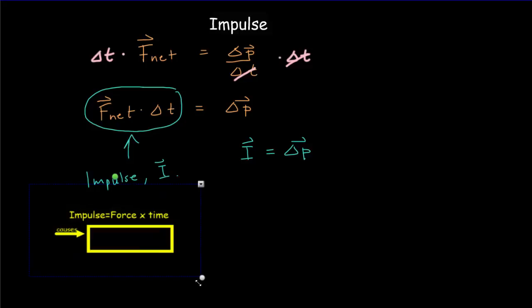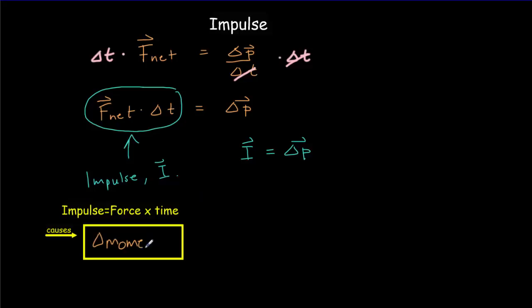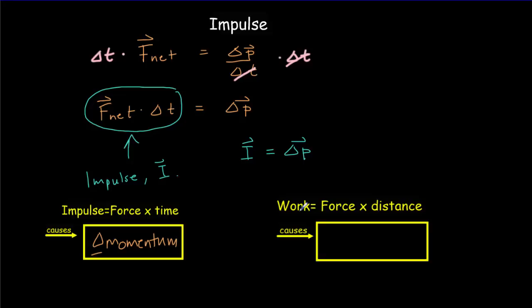A little later in the course we're going to do something very similar. If you apply a force over a greater distance, that causes bigger changes as well. We'll call this product of force times distance the work done, and work will cause changes in energy. So we get a direct parallel: force times time causes change in momentum, and force times distance causes change in energy. They're related, but they're not the same thing.